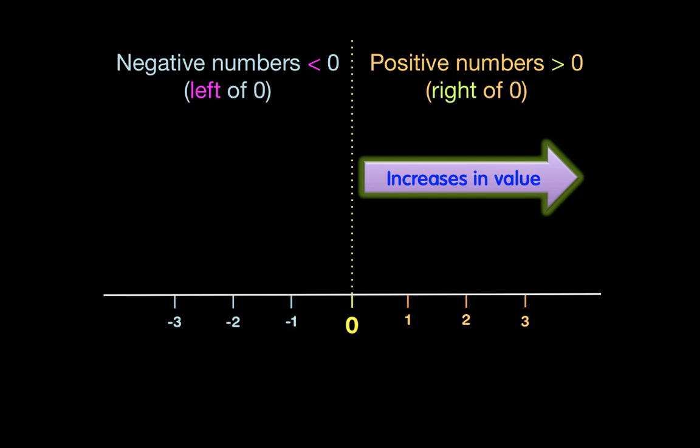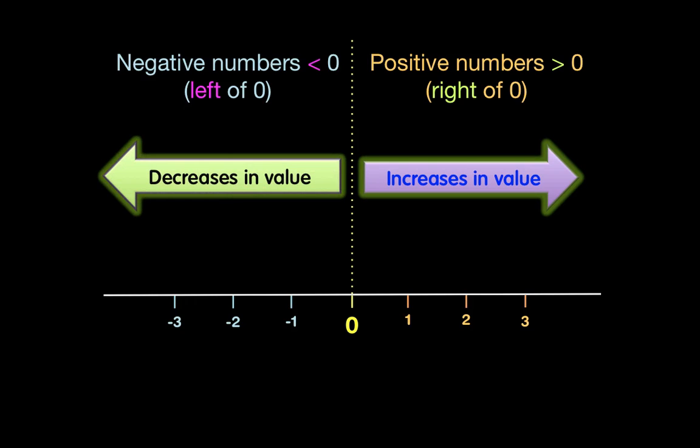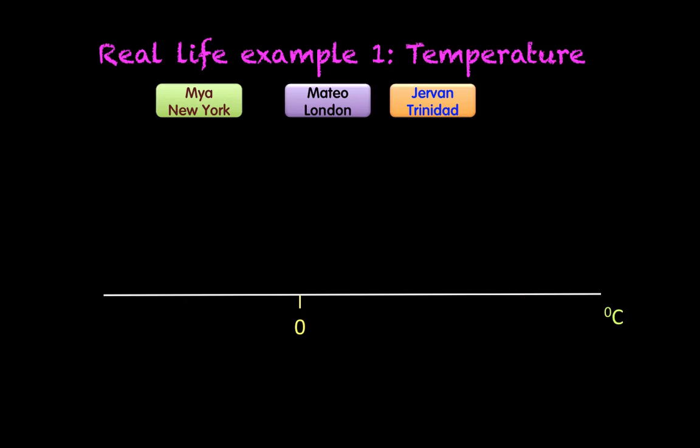Your number increases in value as you go to the right, and numbers decrease in value as you go to the left.